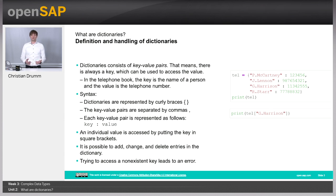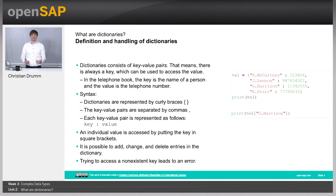Inside the curly braces, there are key-value pairs which are separated by commas. Each key-value pair is represented by a key, followed by a colon, followed by a value. So in the example screenshot, for example, we have the key Paul McCartney and the corresponding value 123456.